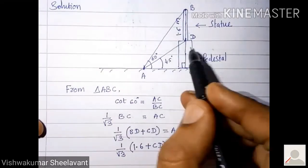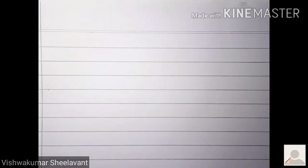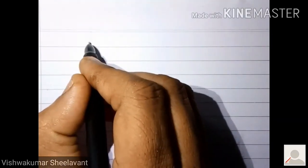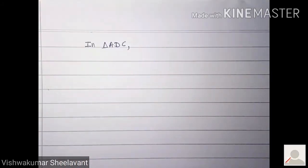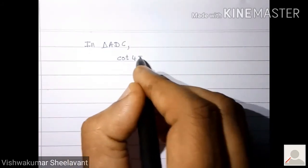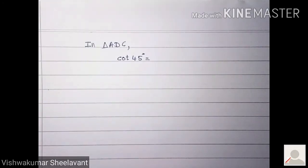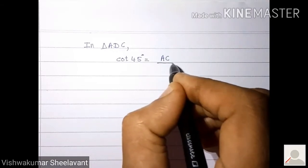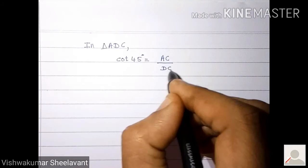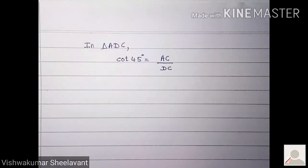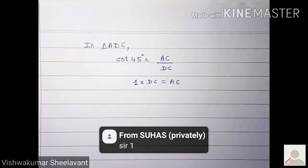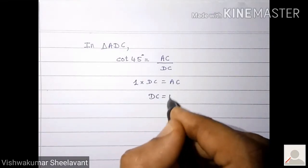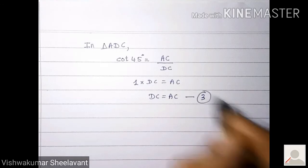Now consider triangle ADC. In triangle ADC, opposite side is DC. Cot 45 is 1, so 1 into DC equals AC. That is DC equals AC. Call this as equation 3.